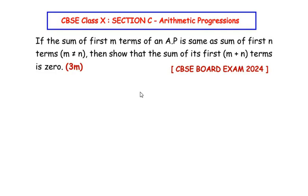Hello and welcome to my channel. In this video we are going to solve an example from the arithmetic progressions chapter. This question is taken from section C of the CBSE board exam 2024 paper. The problem states: if the sum of first m terms of an AP is the same as the sum of first n terms, where m is not equal to n, then show that the sum of its first m plus n terms is zero.